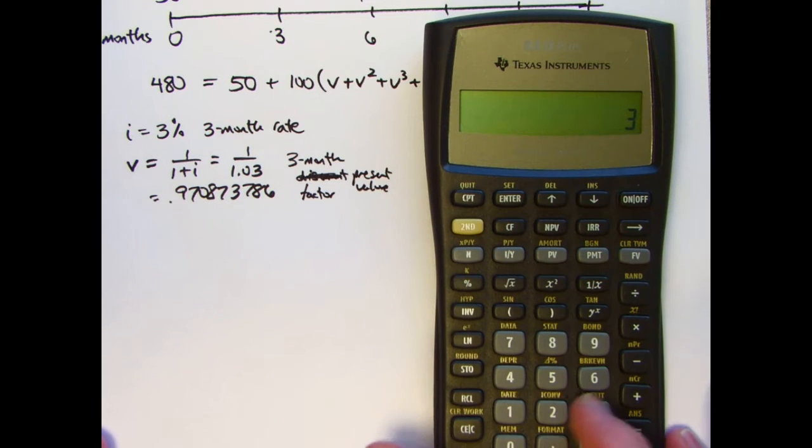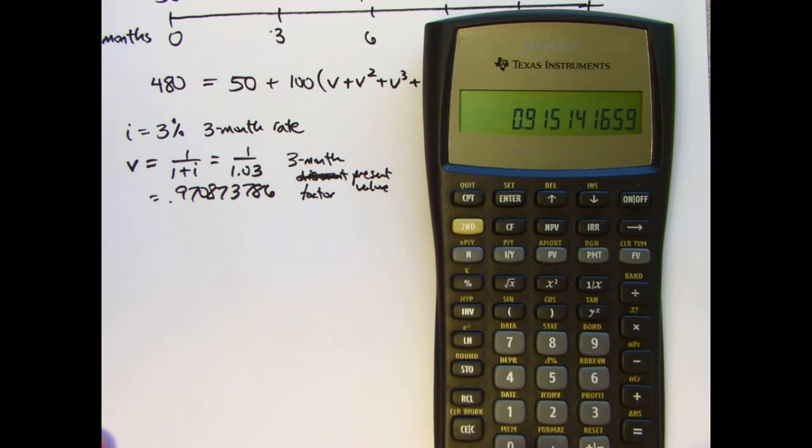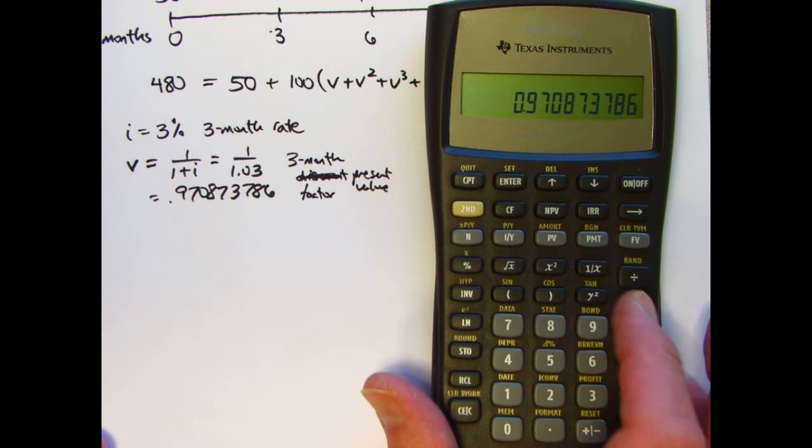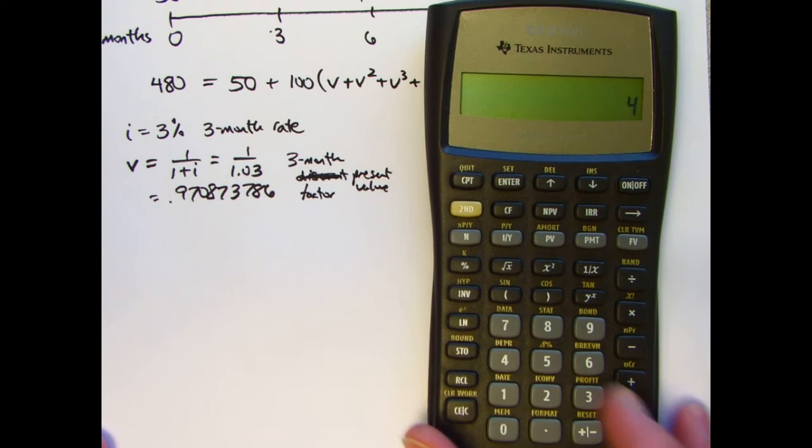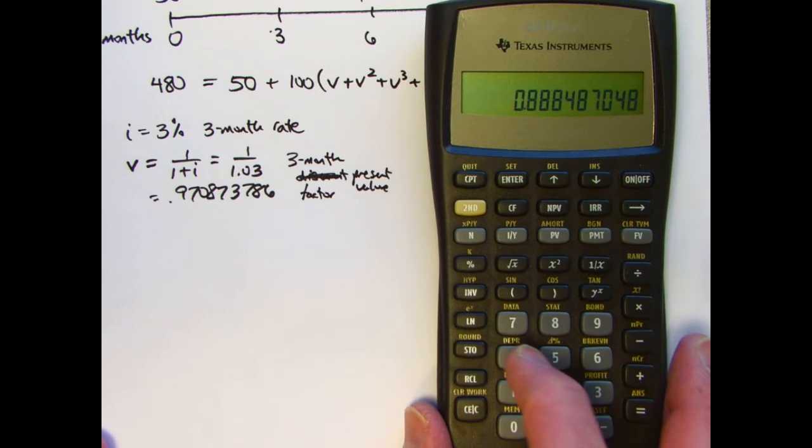Go back to register one, V, and cube it. Store that in register three. Recall the value in register one again, V, and raise it to the fourth power. Store that in register four.